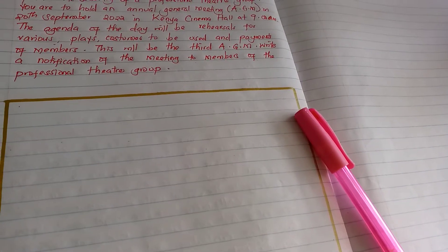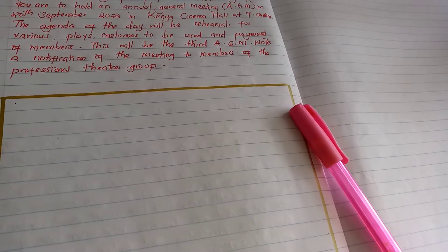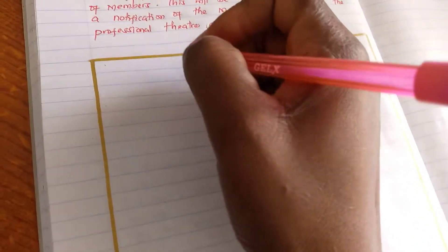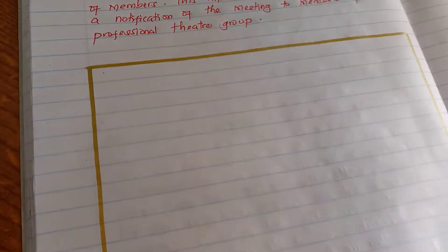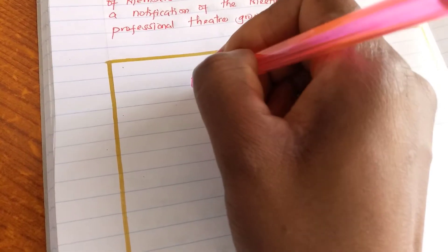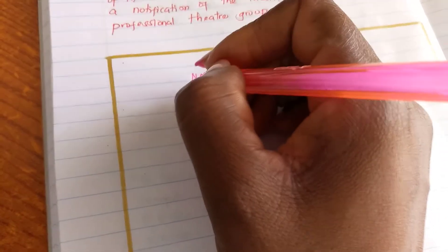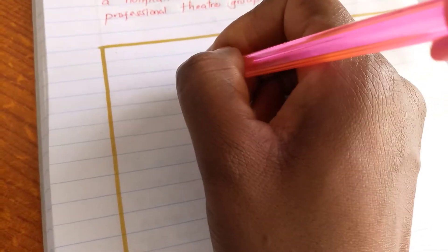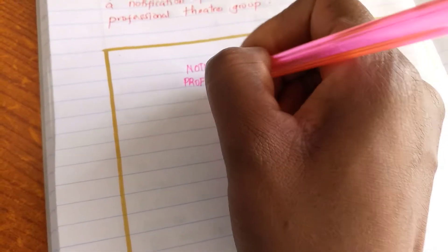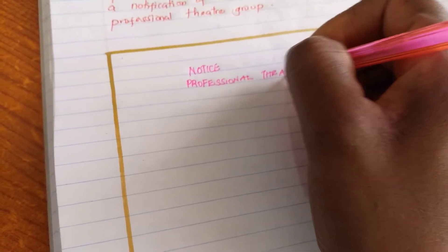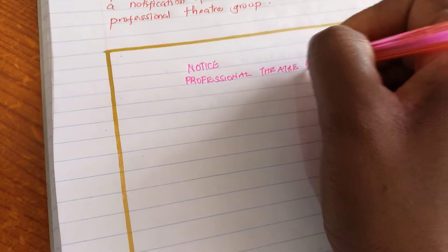Now this requires us to write a notice and the agenda. We begin with the notice. The name 'notice' should appear at the top here in capital letters, and then the name of the group comes next: Professional Theatre Group.